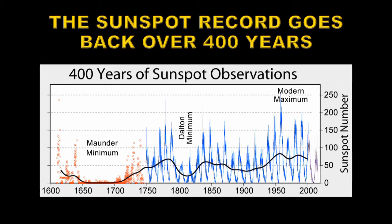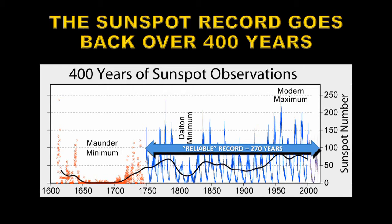We have overall about 400 years worth of sunspot data, but unfortunately it's not all of equal quality. The points on the left — the first 150 years, marked in red — are not of very good quality at all; there were relatively few observations made and the equipment was rather rudimentary. The most commonly used section of data is the so-called reliable record, which stretches from 1750 to the current day — about 270 years.